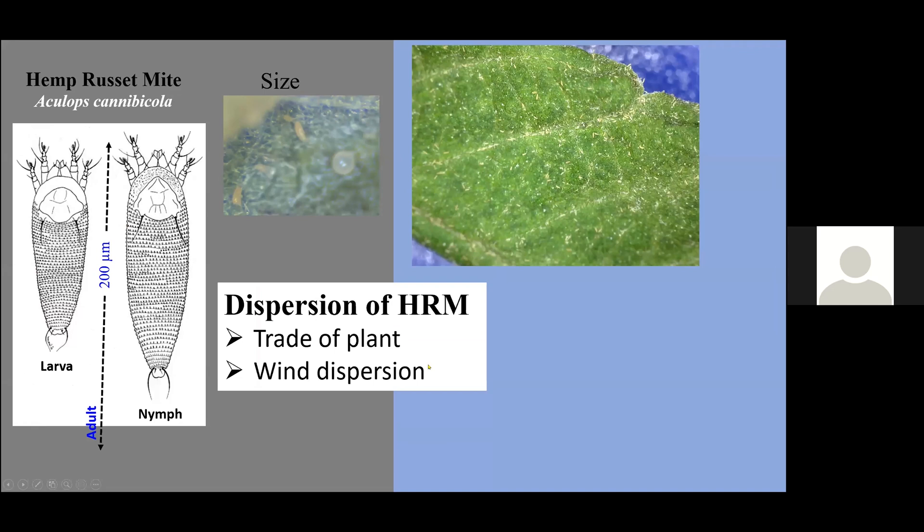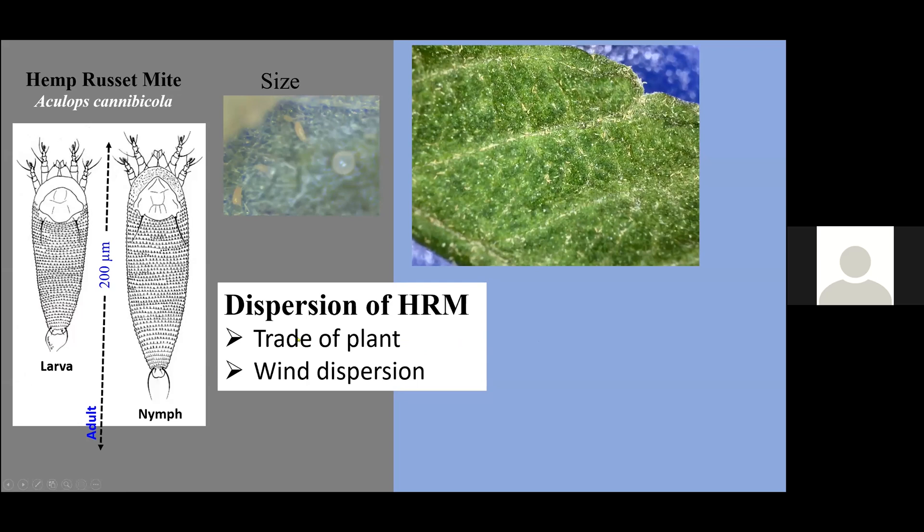One aspect with this mite is how are they spreading across different states. This is due to the trade of plants. Many corn plants are produced in single areas where they are sold across different parts. That's how I was able to get a colony. Also in addition to that, we have wind dispersion.